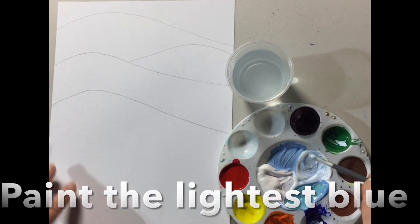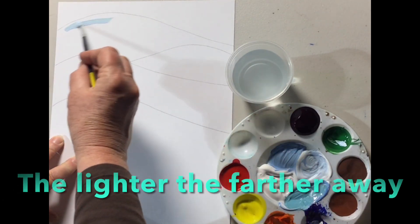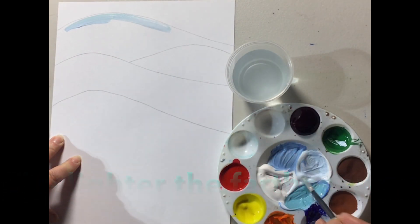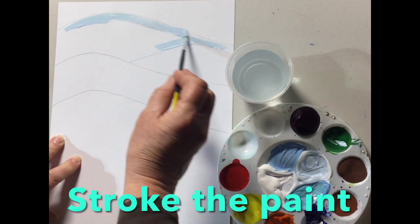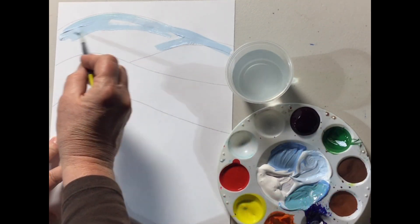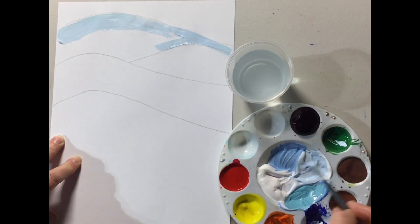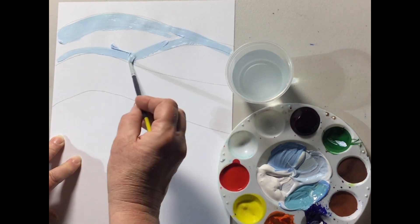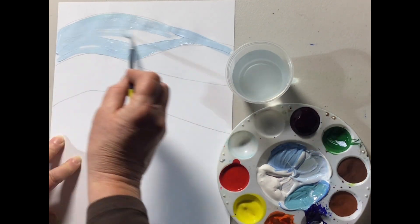Let's take the lightest blue. This is the farthest away for your mountain, so it's going to be the lightest. I'm going to stroke my colors on and paint the lightest blue far away.